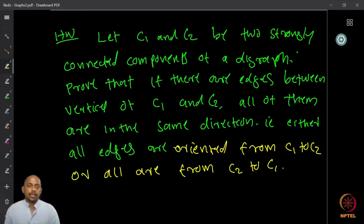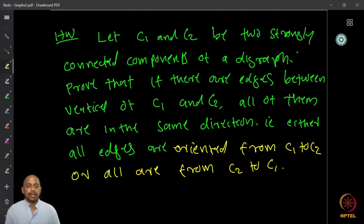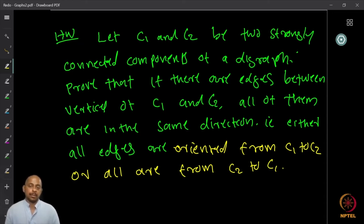A nice homework is to show the following: if C1 and C2 are two strongly connected components, and there are edges between the vertices of C1 and C2, then they must all go in the same direction — either all edges are oriented from C1 to C2, or all edges start at vertices in C2 and end at vertices in C1.